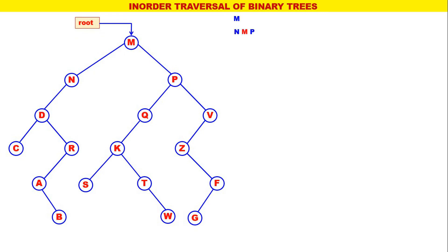Next, the leftmost is N. The inorder for N is DN with N processed. Now the leftmost is D. The inorder for D is C, D, R with D processed, so D is replaced by CDR. Next, the leftmost is C. The inorder for C is C only with C processed.